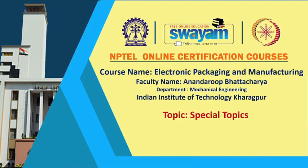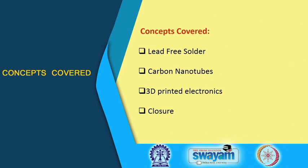Welcome back to what is the last lecture of this course on electronics packaging and manufacturing. As part of this last lecture we are going to look at some special topics — not one particular topic as we have typically followed, but a few subjects which are very relevant today with some of the newer advances where there has been a lot of concentrated research going on in the last few years or within the last decade. The first one we are going to talk about is lead free solder, then carbon nanotubes, and then 3D printed electronics. We will talk about each of these one by one and finally close with a small video.